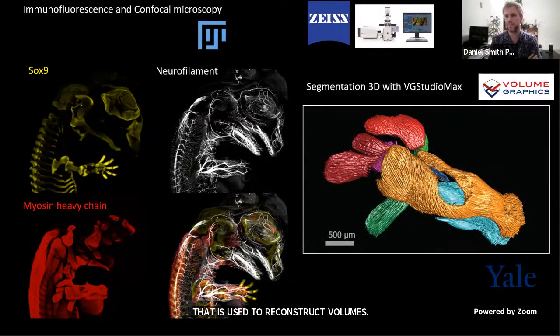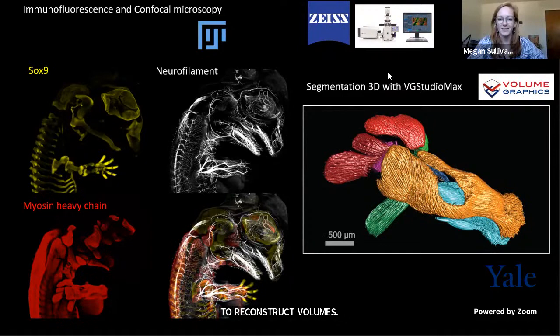That looks like such an intricate process. Did it take a long time to make those? Yeah — each of these embryos is like three or four weeks of work.